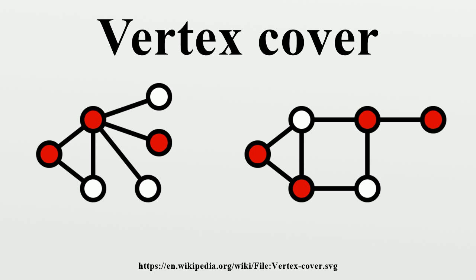An exhaustive search algorithm can solve the problem in time O(2^k), so vertex cover is fixed parameter tractable, and if we are only interested in small k, we can solve the problem in polynomial time. One algorithmic technique that works here is called the bounded search tree algorithm. Its idea is to repeatedly choose some vertex and recursively branch with two cases at each step: place either the current vertex or all its neighbors into the vertex cover. The algorithm achieving the best asymptotic dependence on the parameter runs in time O(1.2738^k).